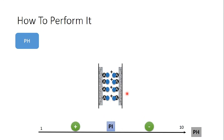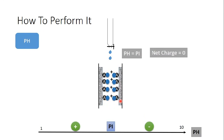If we apply a solution that has a pH equal to the pI of the protein, the protein will hold a net charge of zero and can no longer bind to substance A, so it will be washed out.